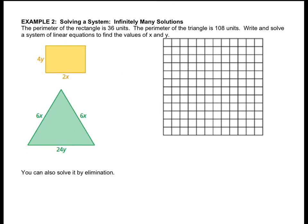Example 2. The perimeter of the rectangle is 36. The perimeter of the triangle is 108. Write and solve a system of linear equations. So the perimeter is when you add up all the sides. So I'll do all my work down here. 4y plus 4y plus 2x plus 2x equals 36. So that gives me 8y plus 4x equals 36.